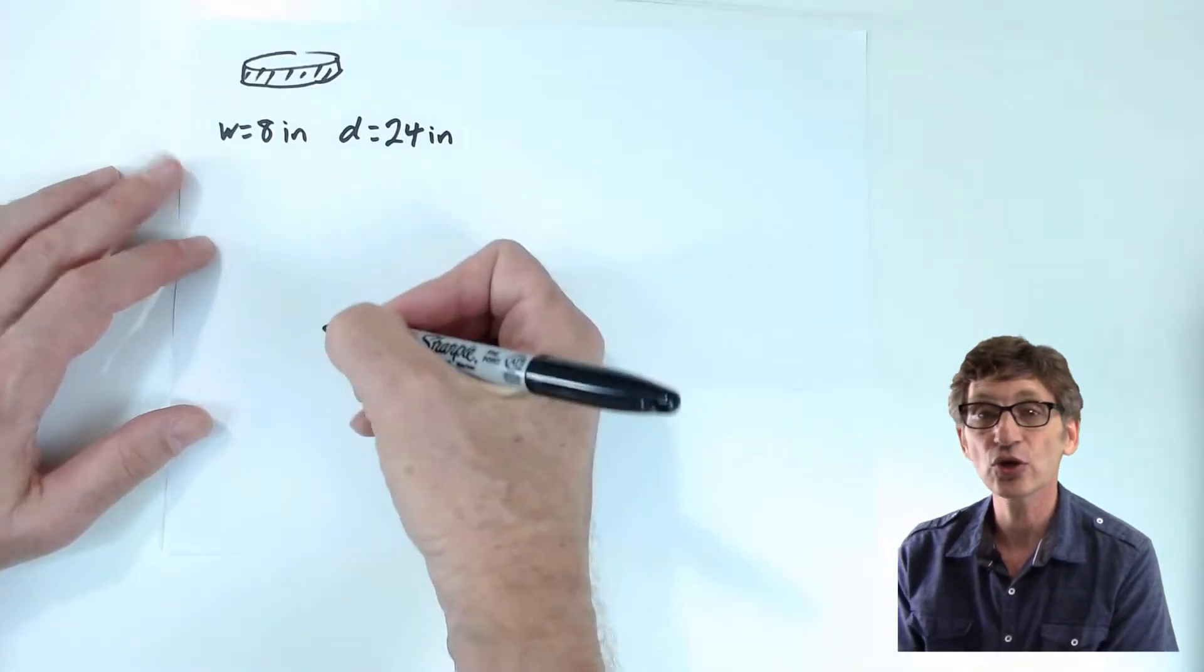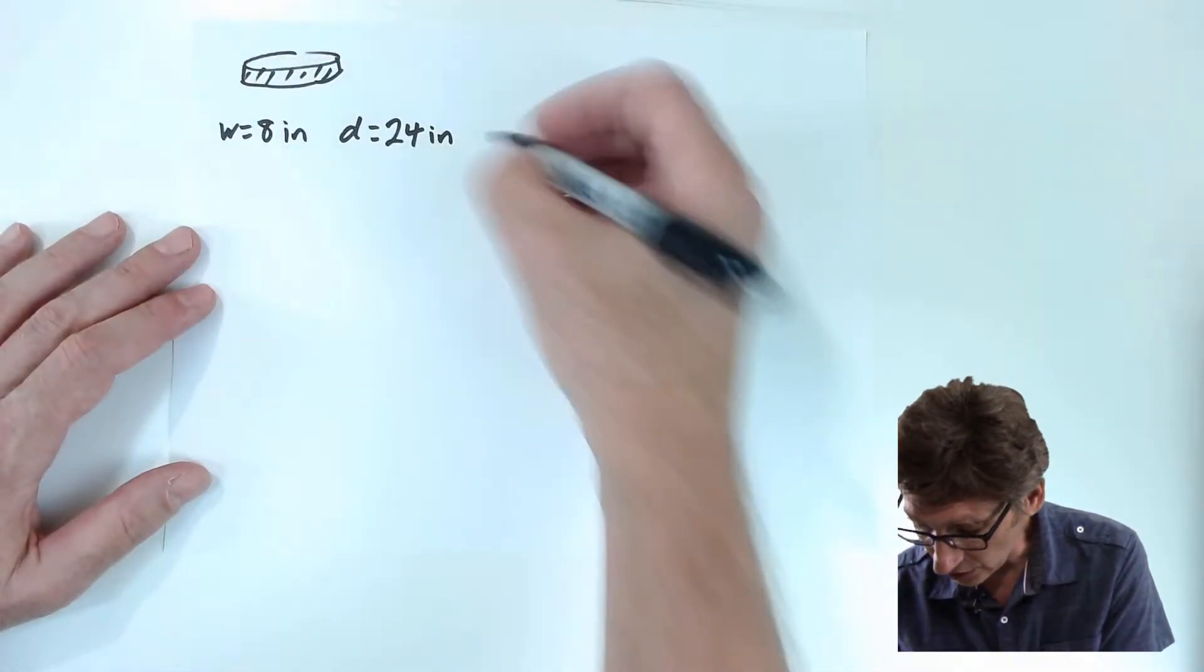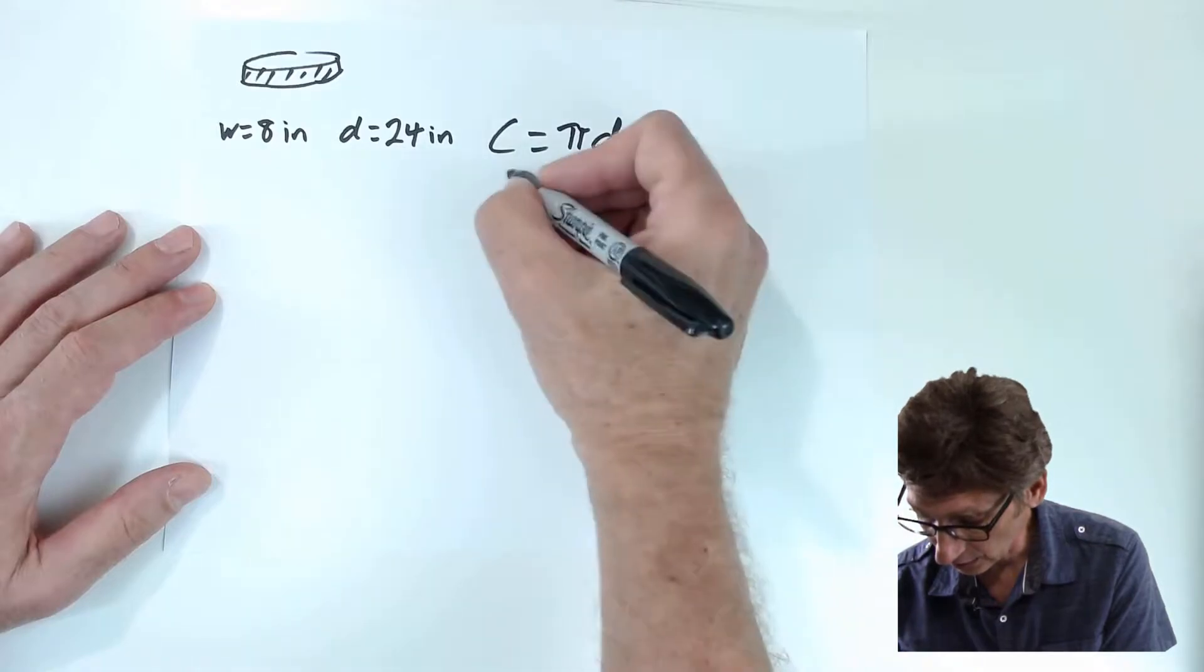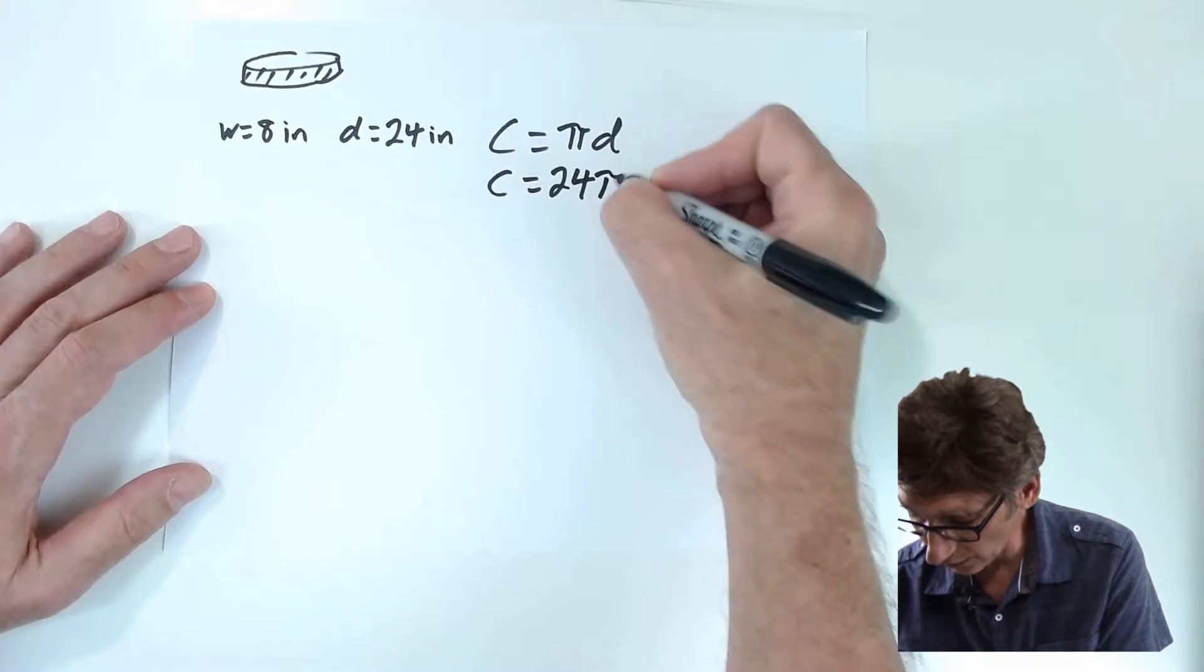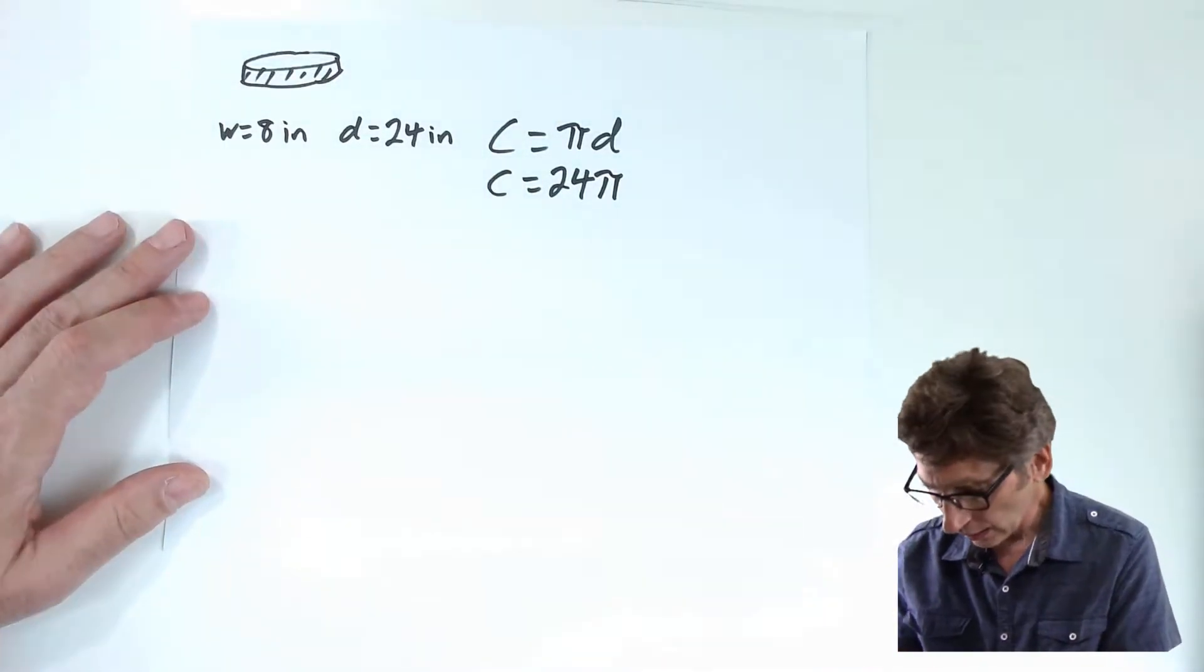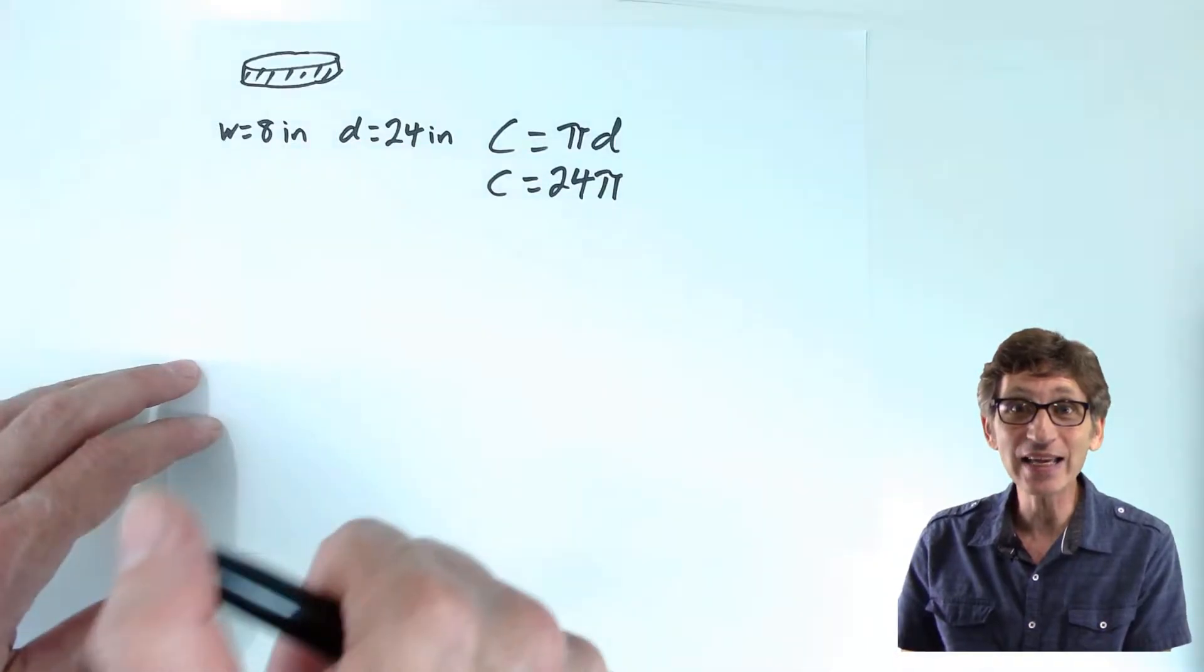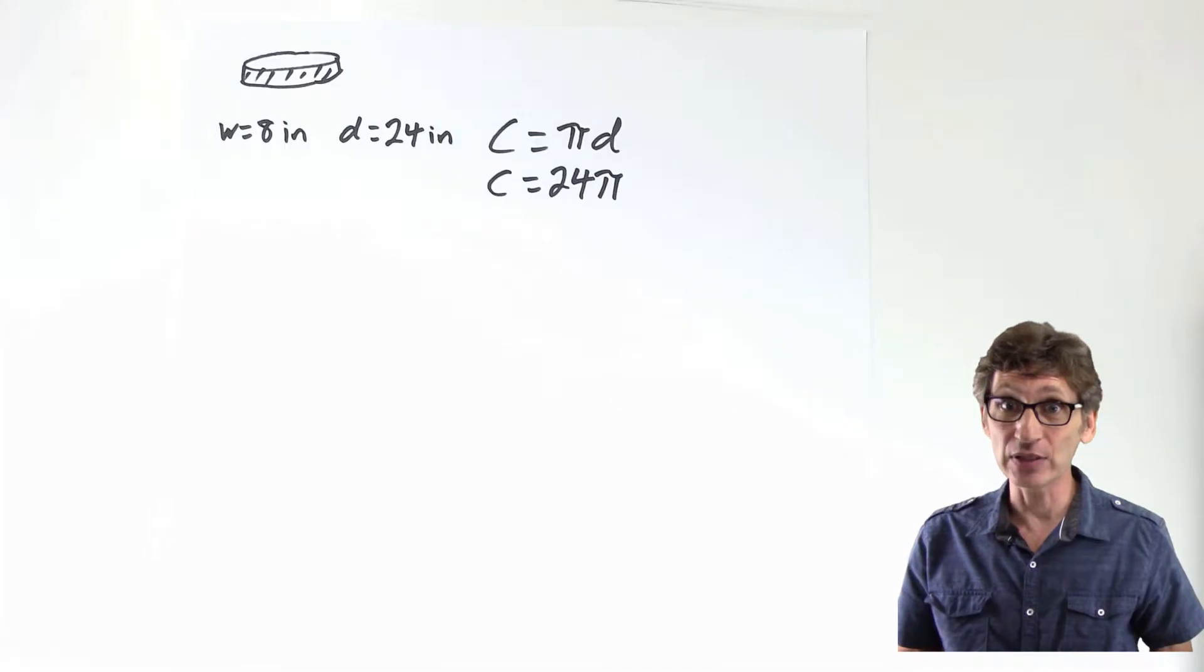And I know the diameter is 24 inches. These are the two measurements we want because I want to start with the circumference. Circumference is pi times the diameter. In this case, the diameter is 24. So I have 24 pi. That's the circumference around the edge of the tire. We could use 3.14 or some other number for pi, but we probably don't need to. The cool thing about pi is it usually takes care of itself.